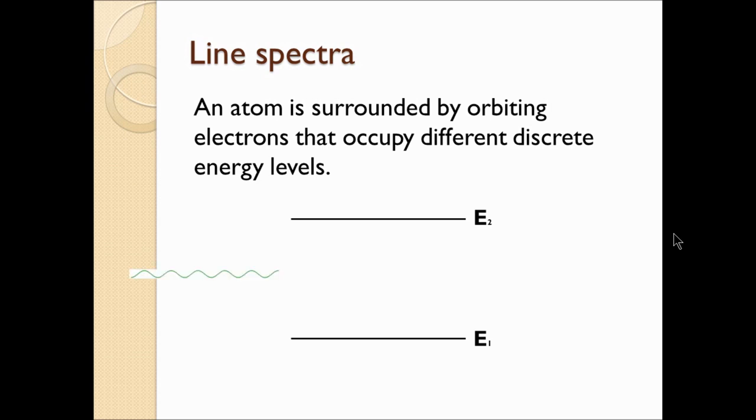A photon with an energy that is equal to the difference between the two energy levels can be absorbed by an electron occupying energy level 1. This electron will then be excited to energy level 2.